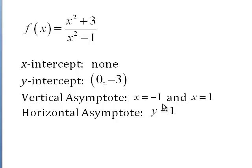The vertical asymptotes, there's two of them: x equals negative 1 and x equals positive 1. And the horizontal asymptote is y equals 1.